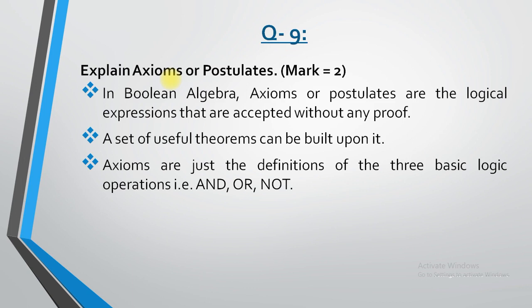For example, 2 plus 3 equals 5 — that is a postulate or axiom. We have accepted that 2 plus 3 equals 5; there is no proof for it. Similarly in boolean algebra there are certain predefined postulates which do not contain any proof. You just need to use them. A set of useful theorems can be built upon these postulates, and they are defined using the 3 basic logic gates: AND, OR, and NOT.